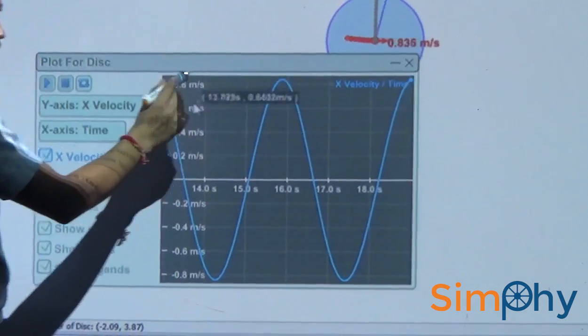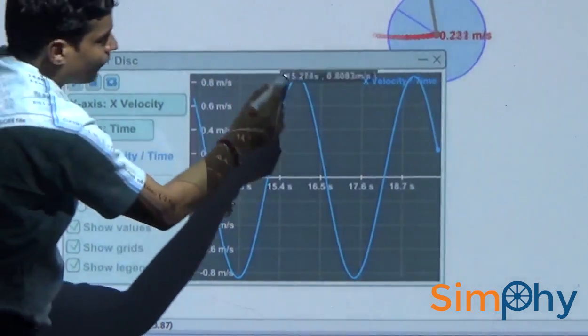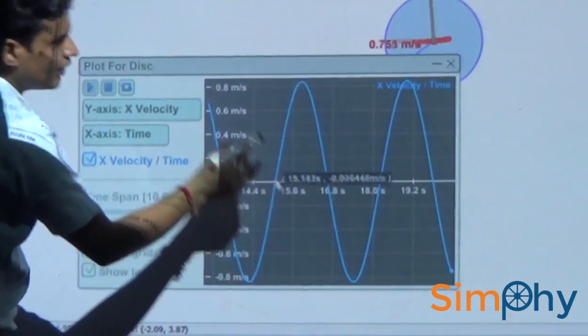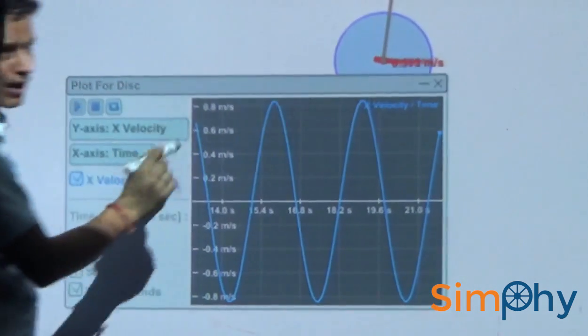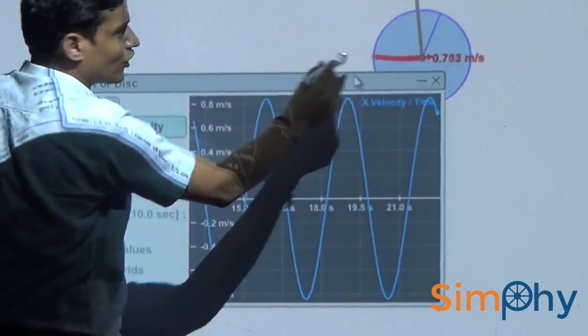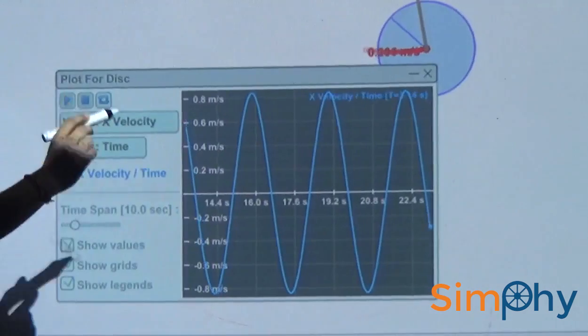Lesser the amplitude, more will be similarity of the motion with sine function. That's why we can see for small amplitude the motion of simple pendulum is simple harmonic motion.